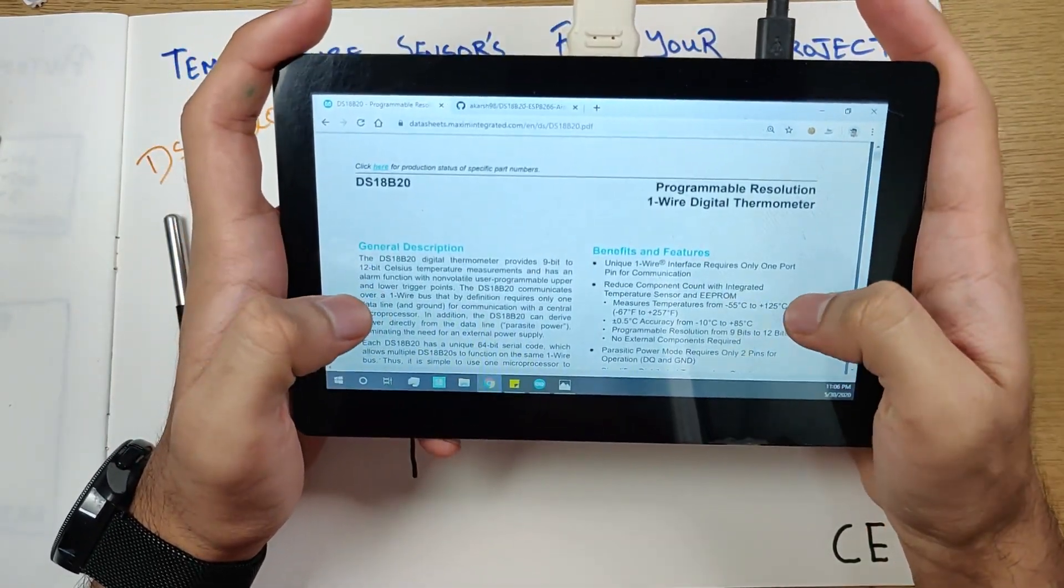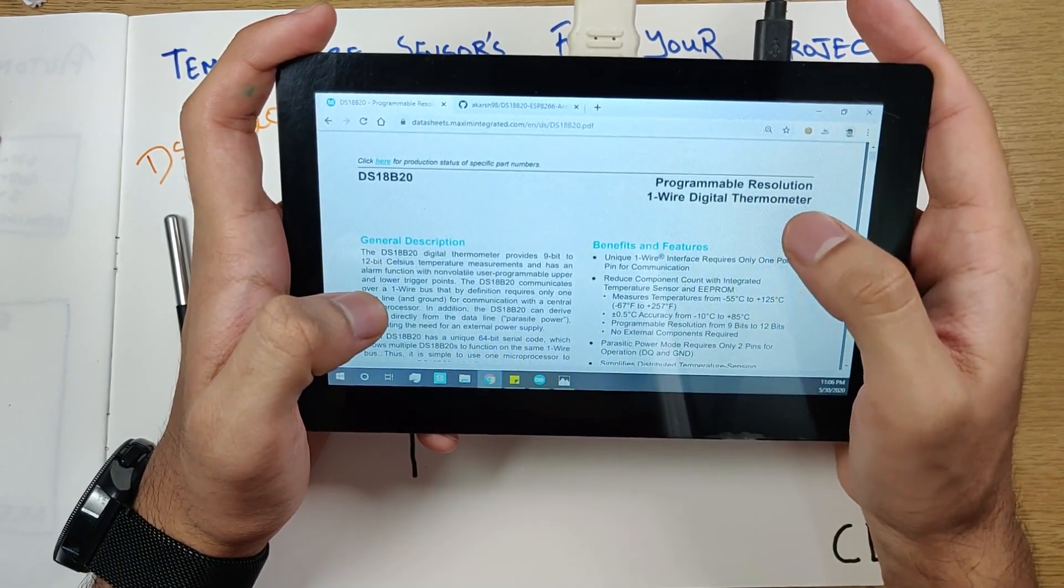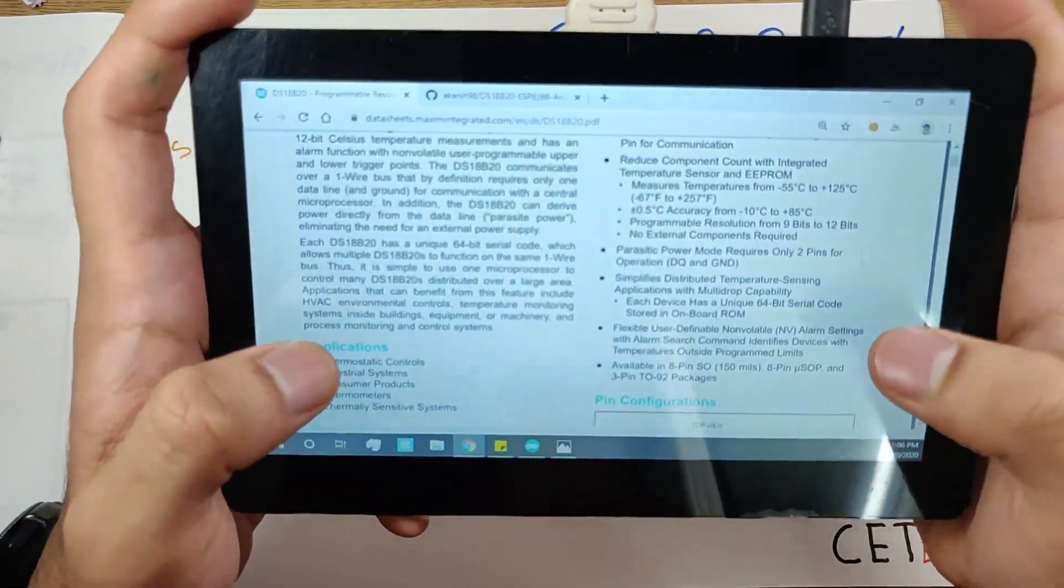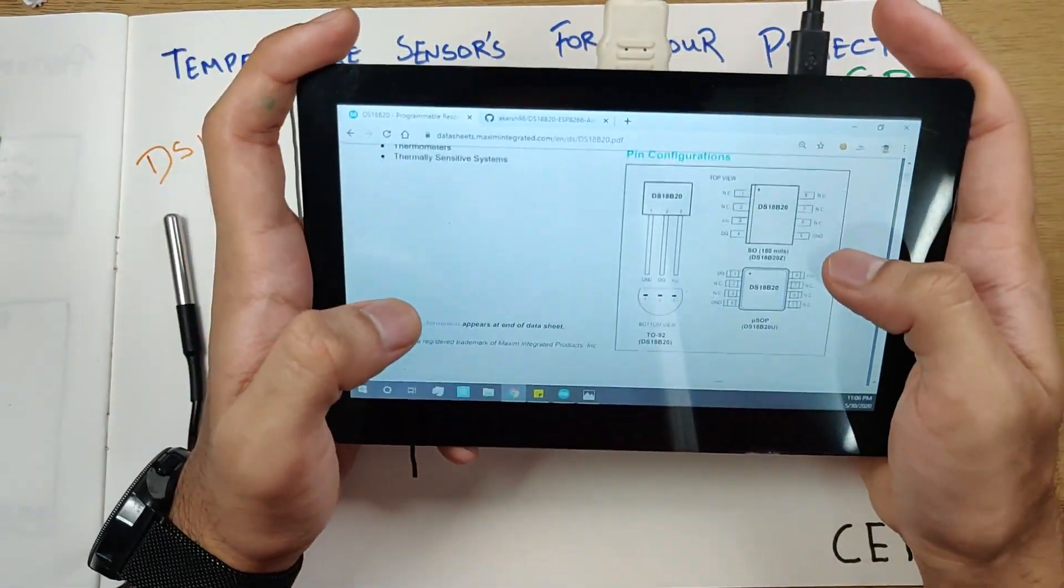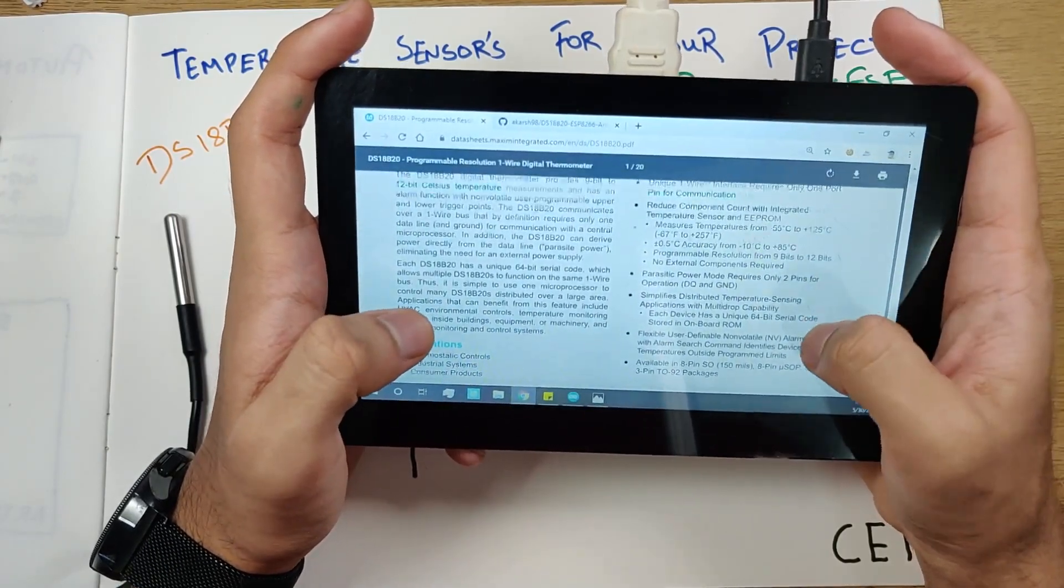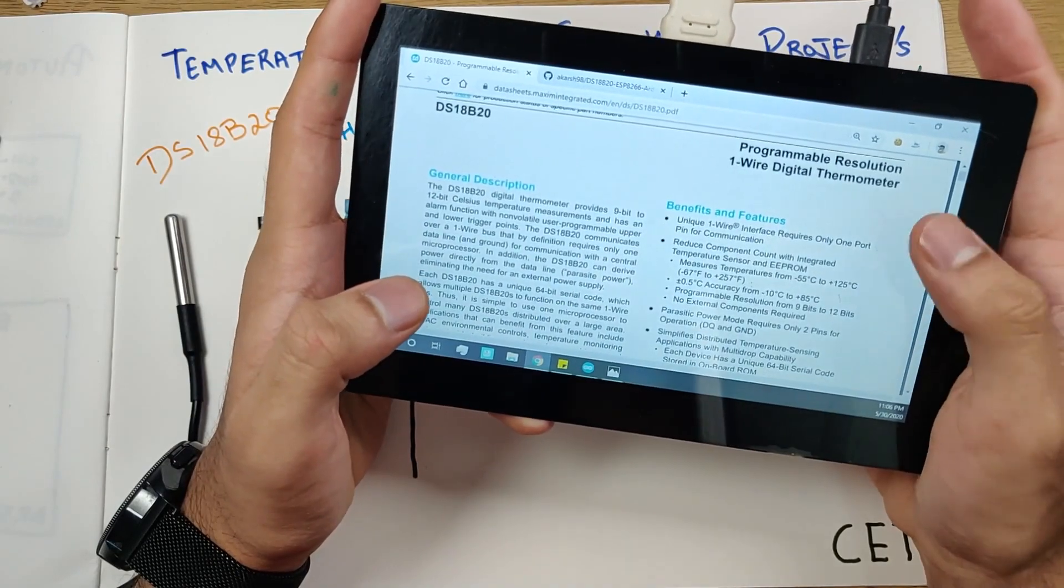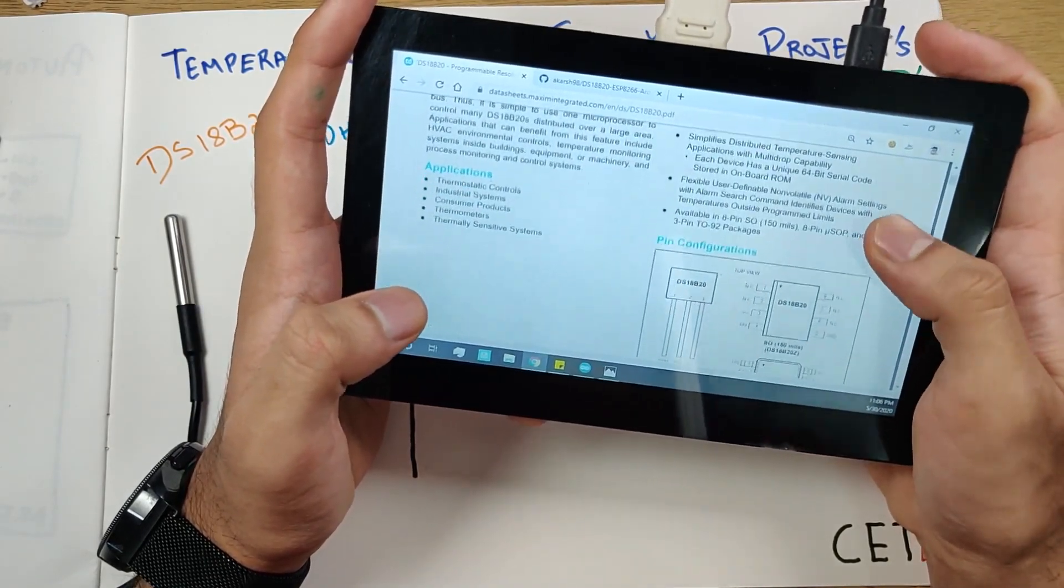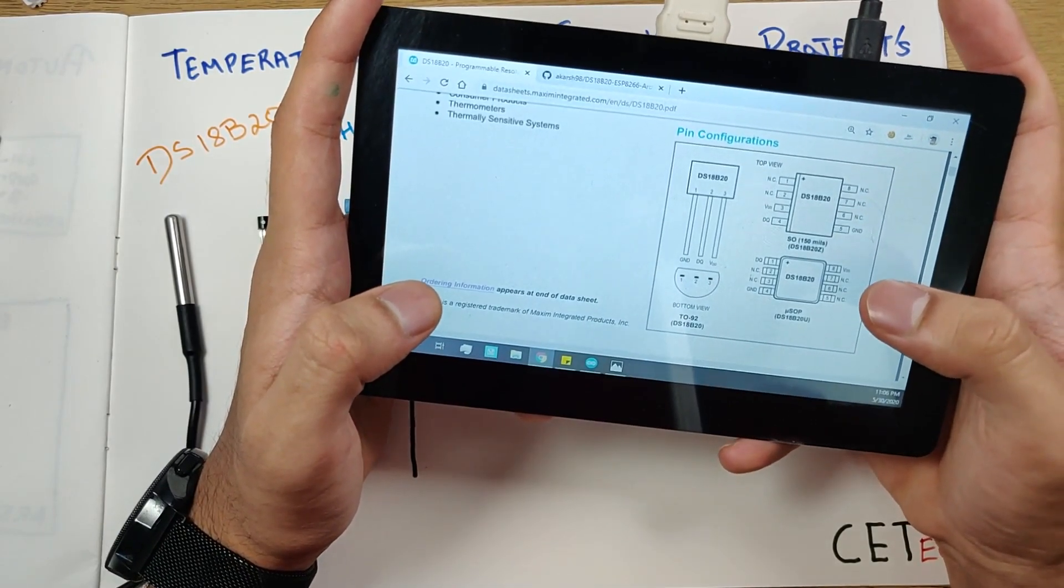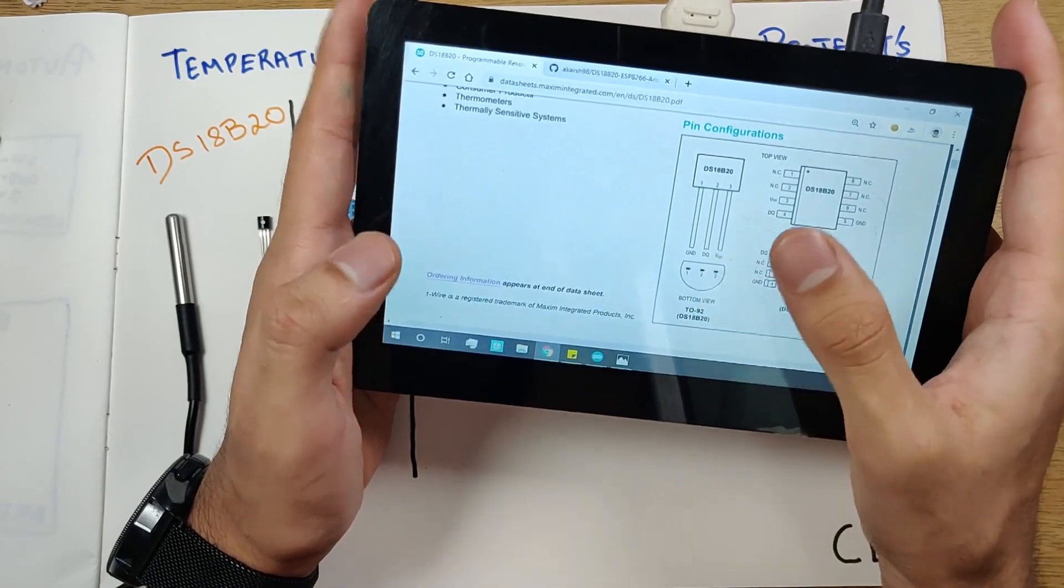So the DS18B20 is a programmable resolution one-wire digital thermometer. It's a digital thing. Let's look at the types of packages. We will be looking at the features and the benefits and the features while we'll be comparing them side by side, but we can start with looking at the pin configuration and the type of packages that the datasheet lists down.